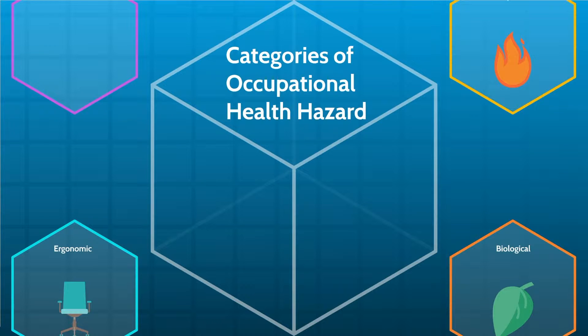Categories of Occupational Health Hazards. Occupational health hazards can be classified into five categories.